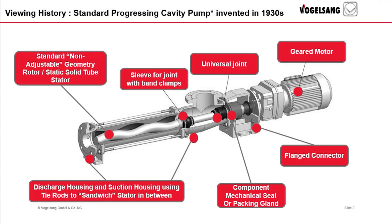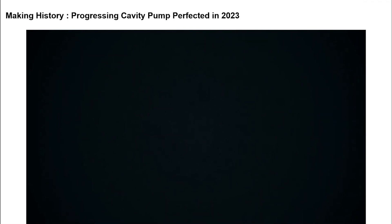This makes the flow proportional to RPM — so if you double the speed, you double the flow. Now that you've viewed the past history, you're about to see how Vogelsang is breaking with convention and making history.